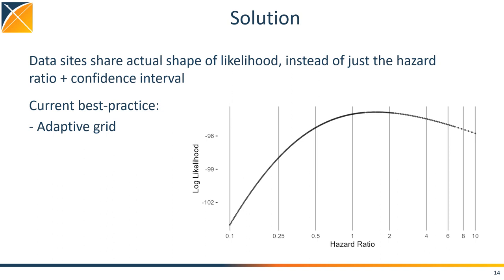As I try to show in this plot, the adaptive bit means we try to space these grid points so that they are closer together when there is more curvature, and fewer when the curve is almost straight, thus minimizing the number of points at which we need to evaluate the likelihood.